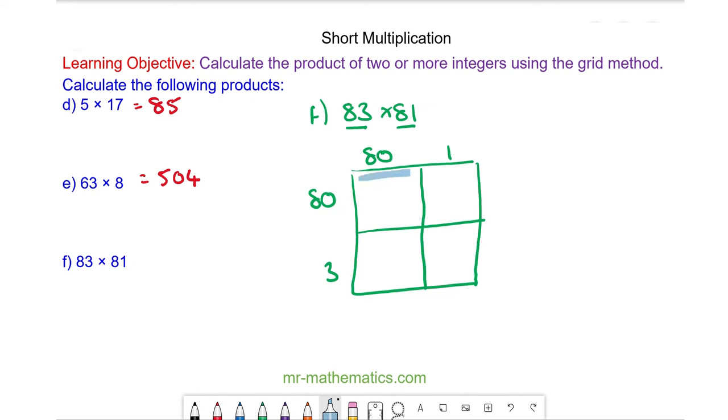For this section I'm going to work out 80 multiplied by 80. 8 times 8 is 64 and with two zeros so we have 6400. In this section we have 80 times 3 which is 240.